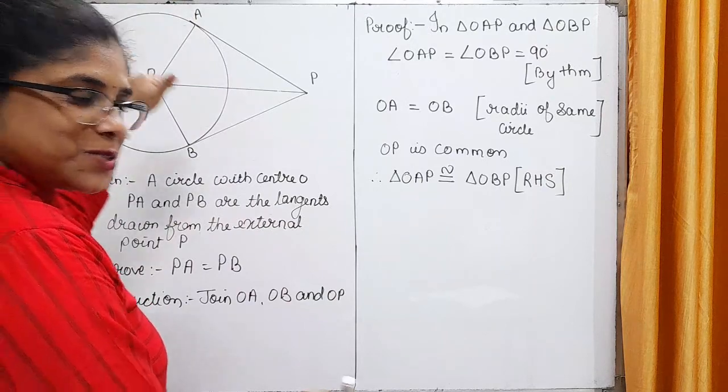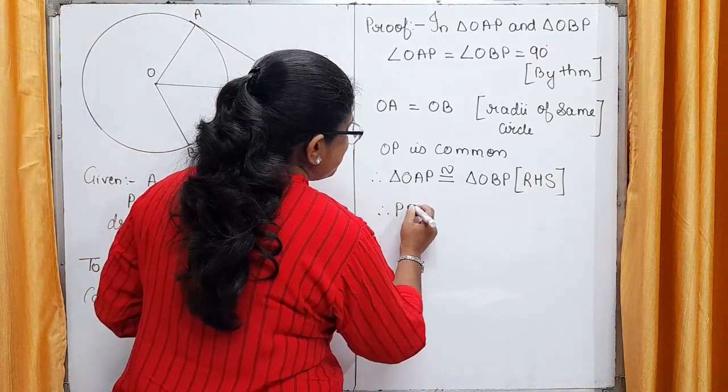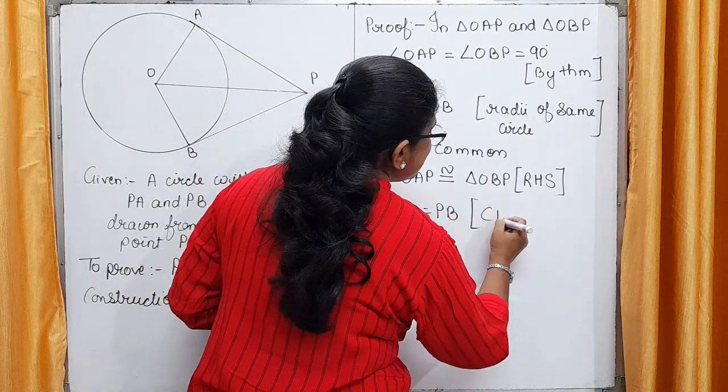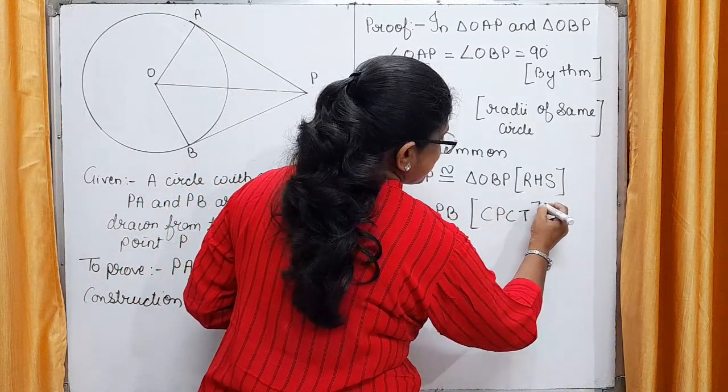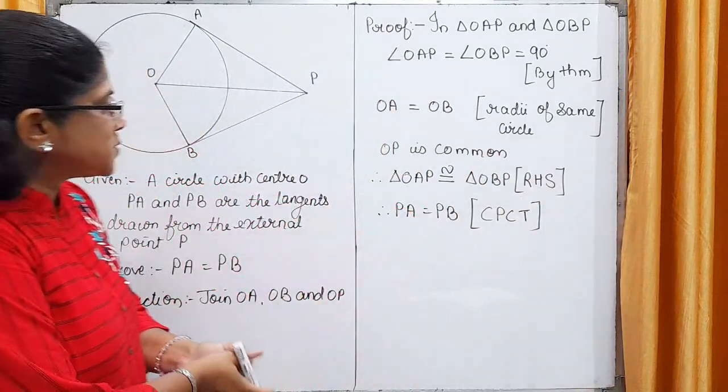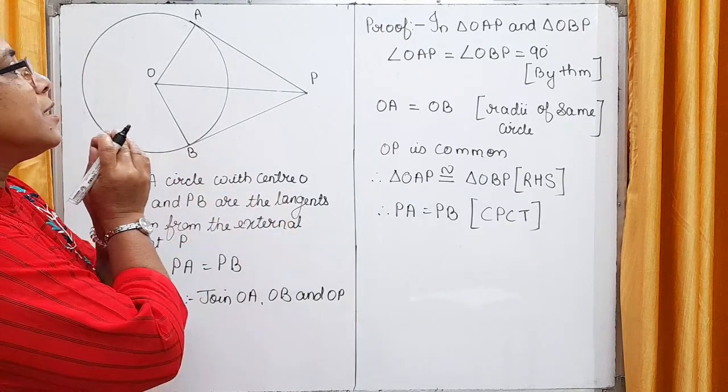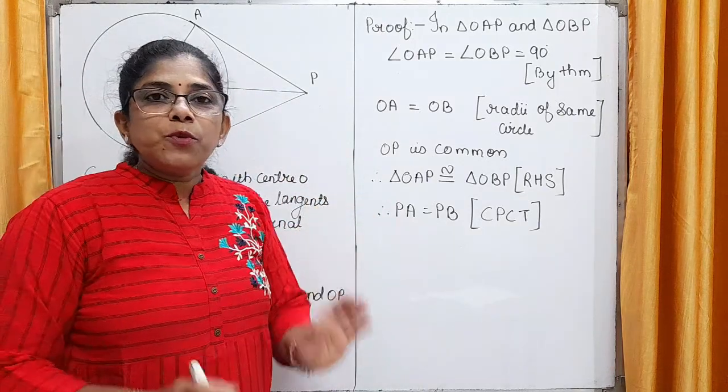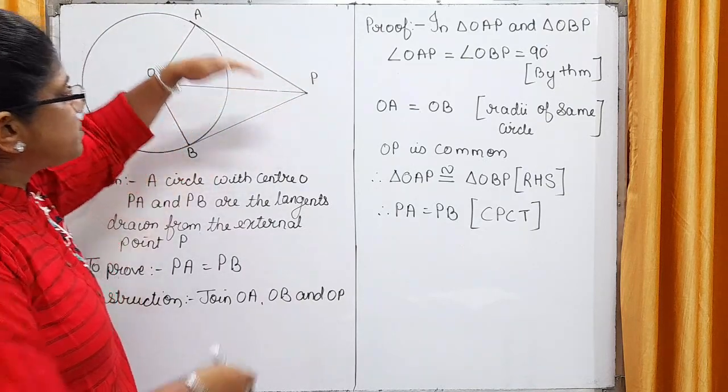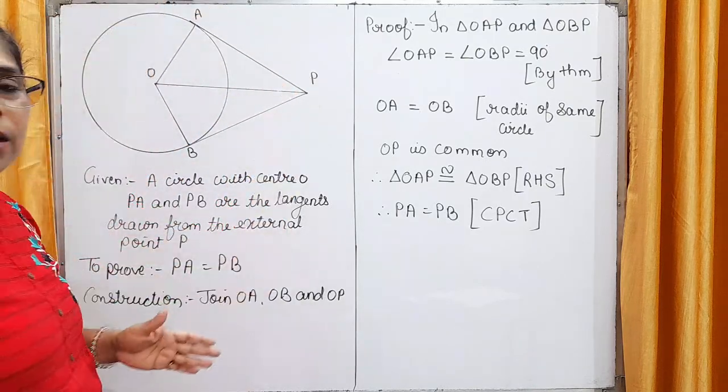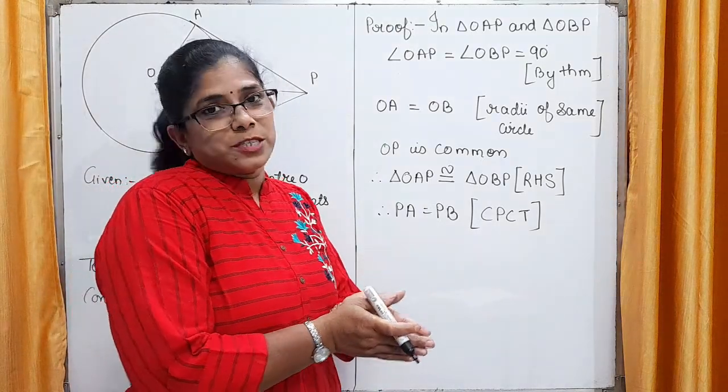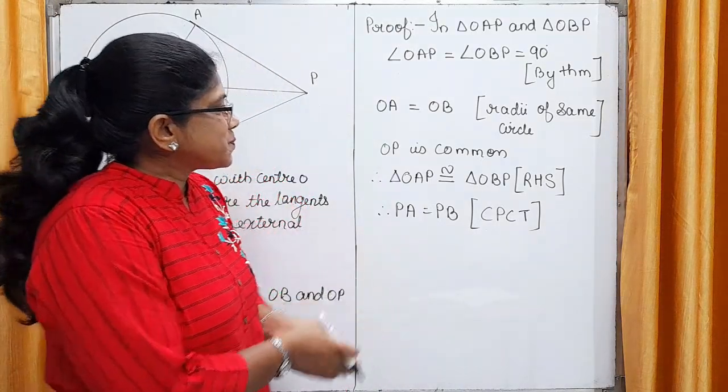And as these two triangles are congruent, PA is equal to PB. PA is equal to PB. CPCT. Corresponding parts of congruent triangles. So, in this way, in just few steps, we prove that when we draw two tangents to the circle from external point, these two tangents are equal. This theorem is very simple but important.